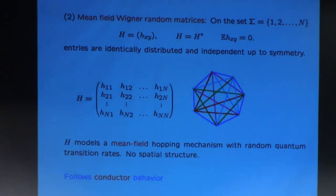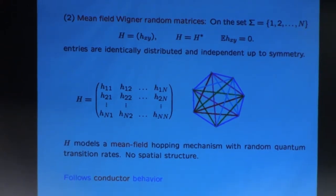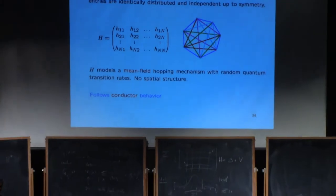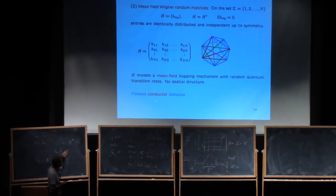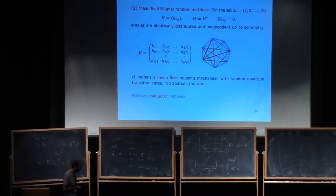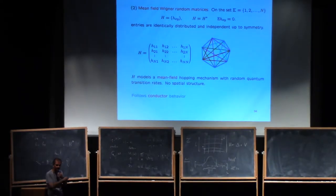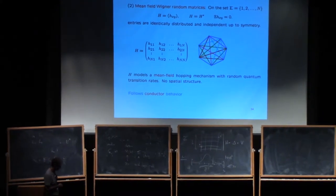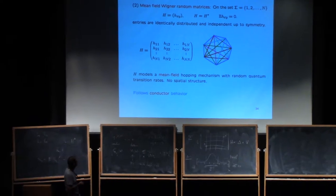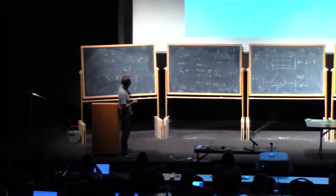There is no spatial structure in that case. This model follows the conducting behavior, and you have seen at least certain aspects of that. You have seen the universality behavior, but also the delocalization story — the eigenfunctions are delocalized. That's also known in that model.